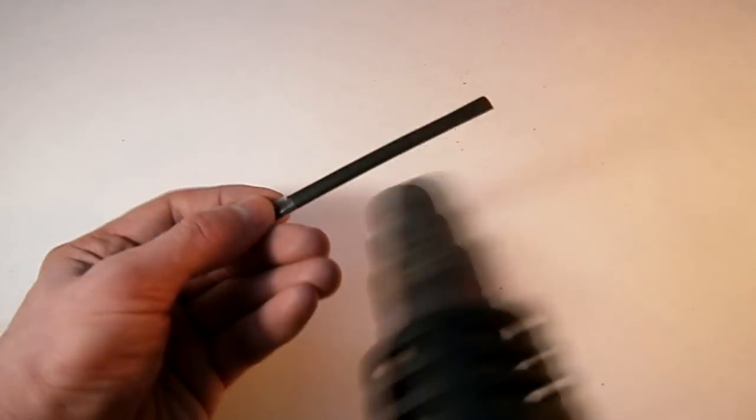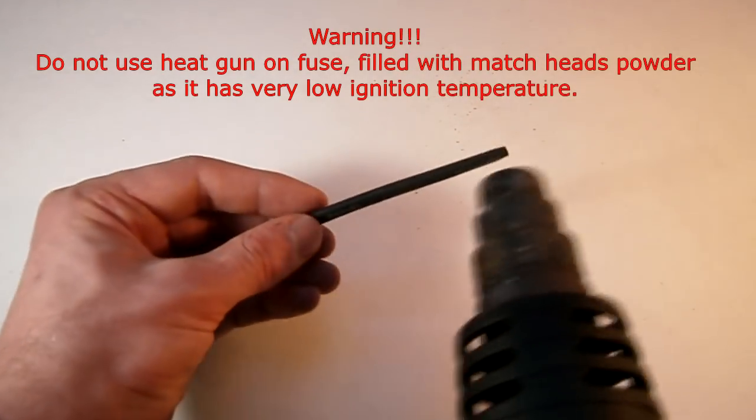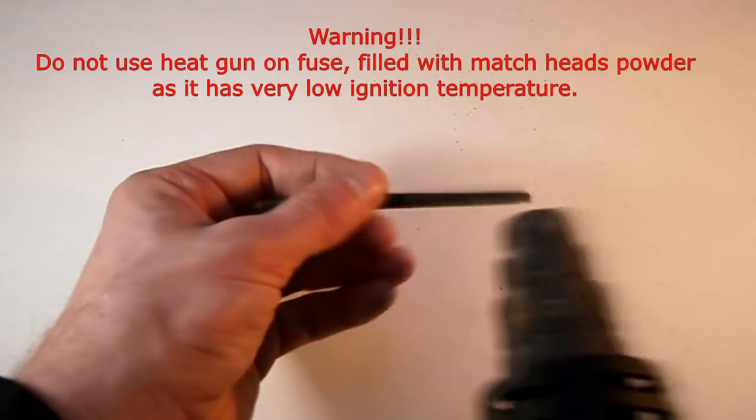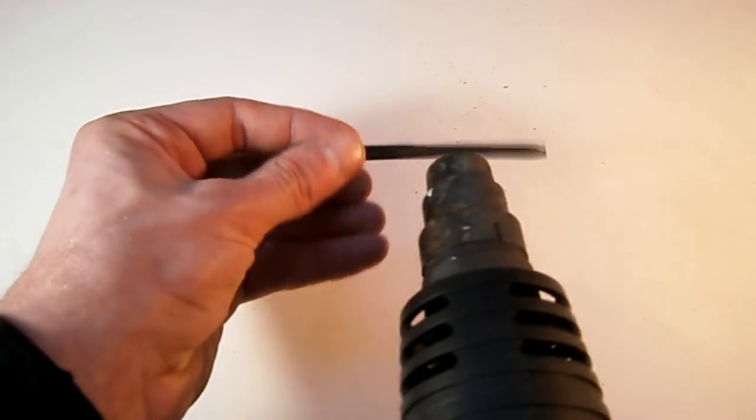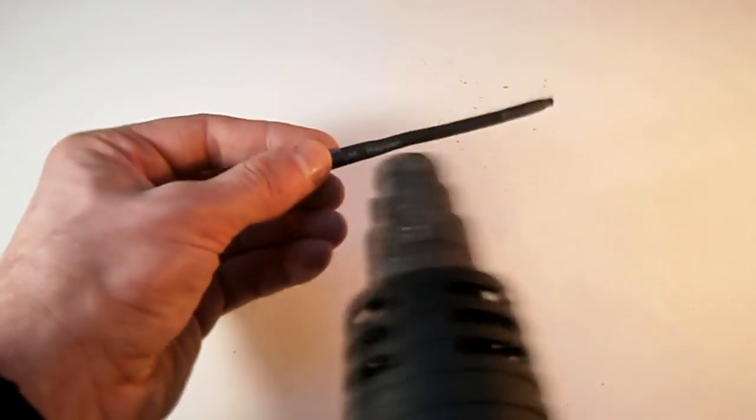Then heat it with a heat gun. The tube will compress itself and the powder inside. This is the simplest and the fastest way to make homemade fuse and it gives very good results.